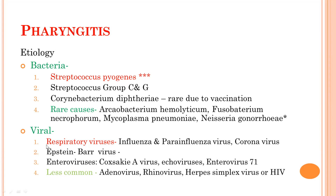Viral causes are most common, accounting for about 85% of pharyngitis cases. Among viral causes: respiratory viruses, influenza, coronavirus, Epstein-Barr virus as part of infectious mononucleosis, enteroviruses like Coxsackievirus, echovirus, and enterovirus 71. Less common causes include adenovirus, rhinovirus, herpes simplex virus, and primary HIV.